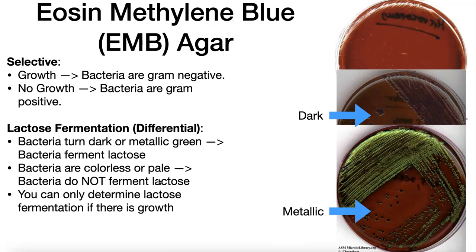When looking at your plates, look at two things: does the bacteria grow or not grow, and make the connection as to what that means. In the EMB plate, if it grows the bacteria are gram-negative; if it doesn't grow the bacteria are gram-positive. If there is growth, on all of the plates there's a differential reaction with some color change. Any color you see, you should visualize what it is and then connect that color to a conclusion about the bacteria. For example, if you saw a metallic green sheen, you would conclude the bacteria do ferment the sugar lactose.